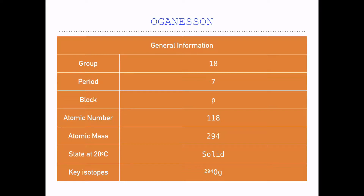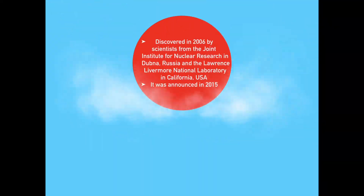It is solid at 20 degrees Celsius and it only has one key isotope. Organescent was discovered in 2006 by scientists from the Joint Institute for Nuclear Research in Dubna, Russia, and the Lawrence Livermore National Laboratory in California, the United States.